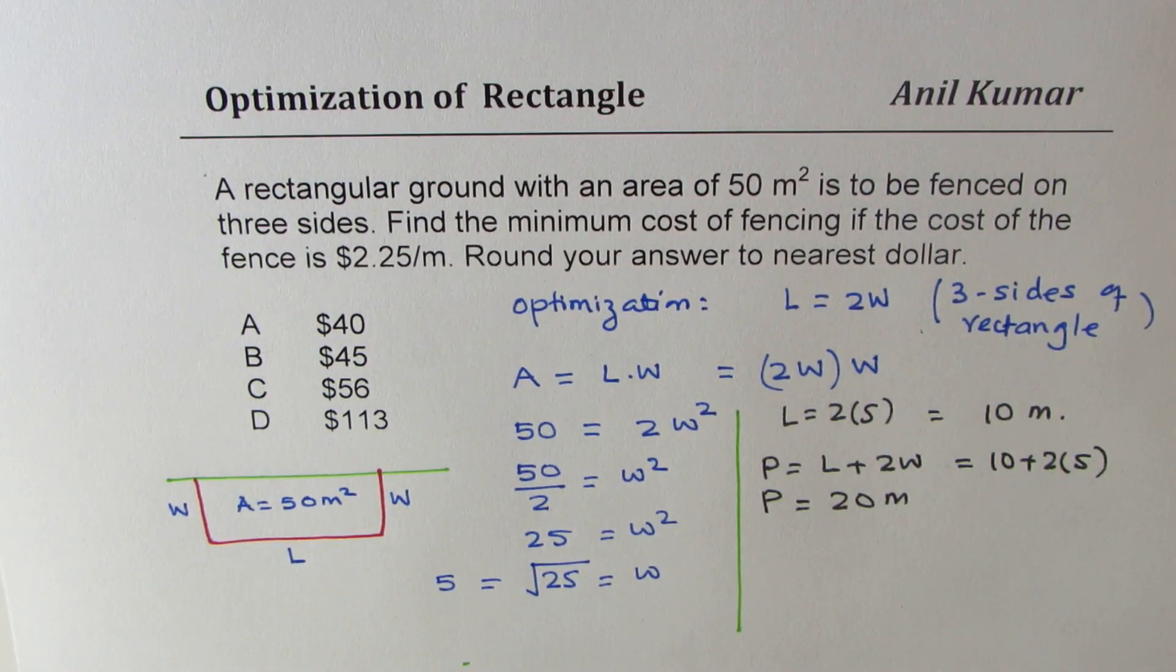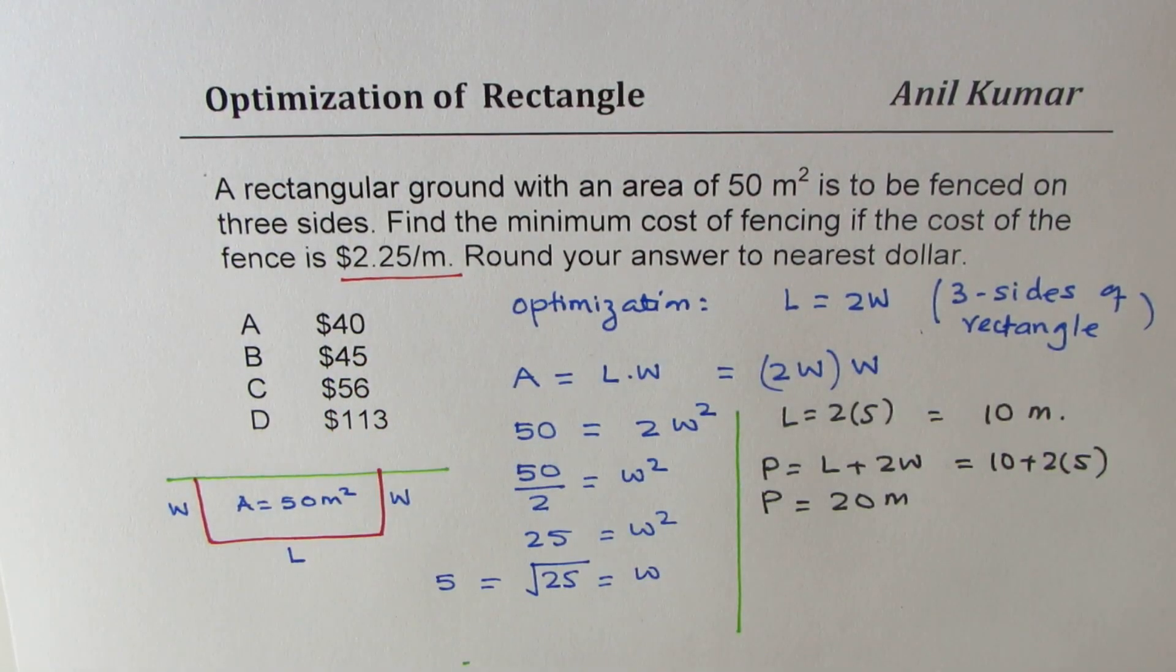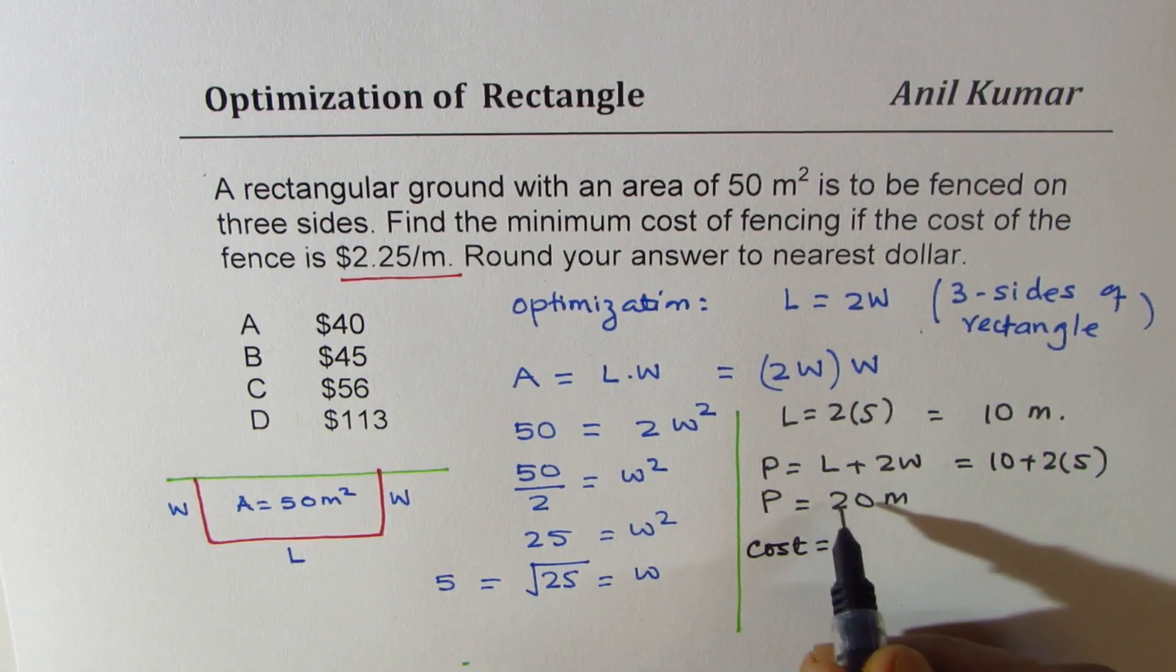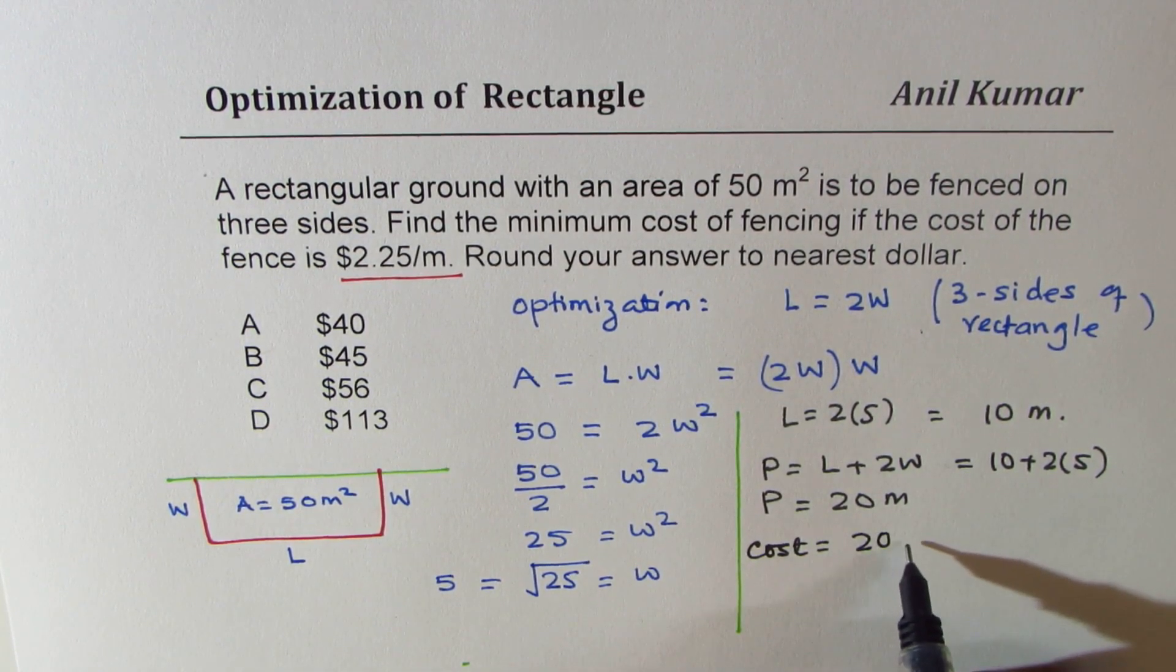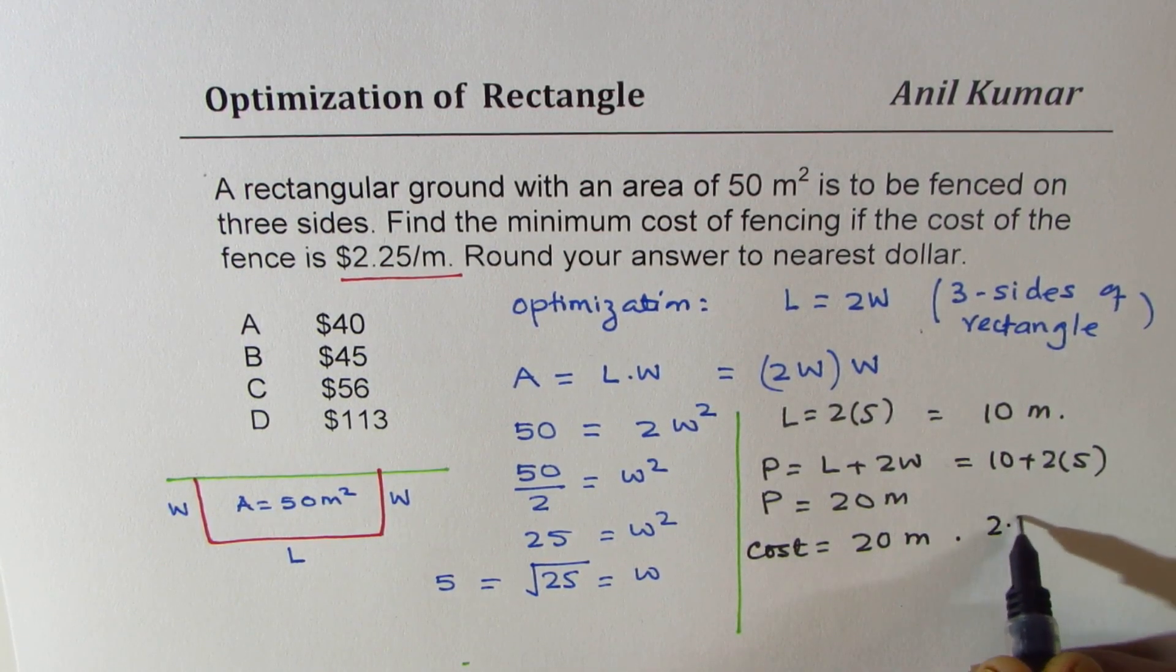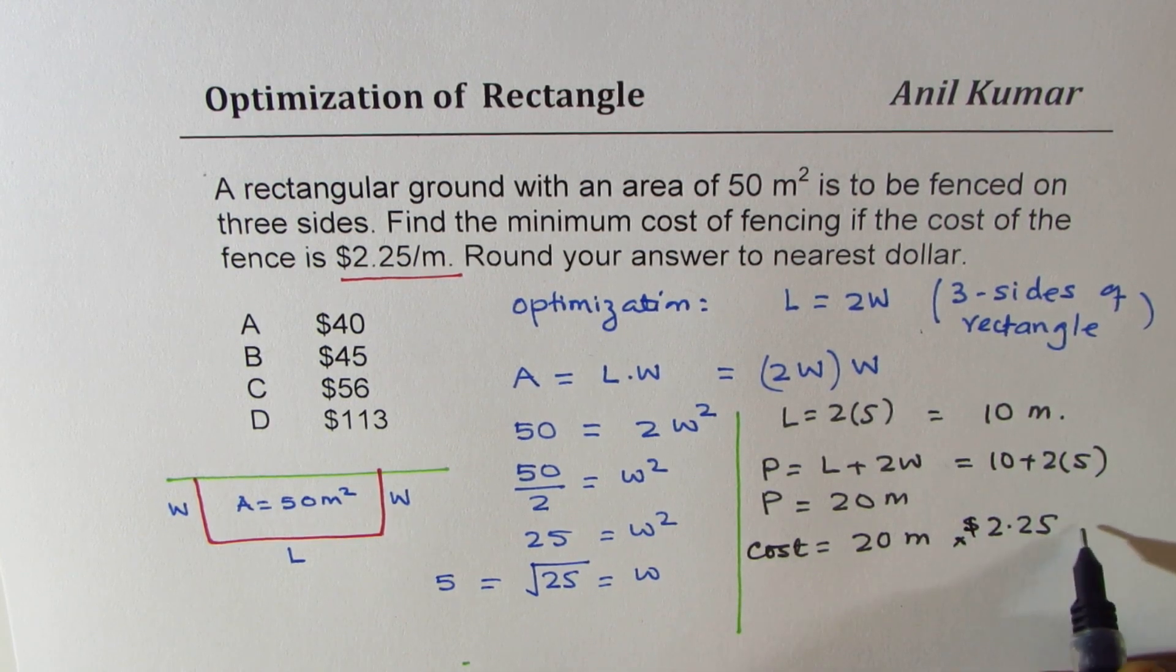Now, since we know that the cost of fencing is 2.25 dollars per meter, we can now find the cost as product of perimeter 20 meters times 2.25 dollars per meter.